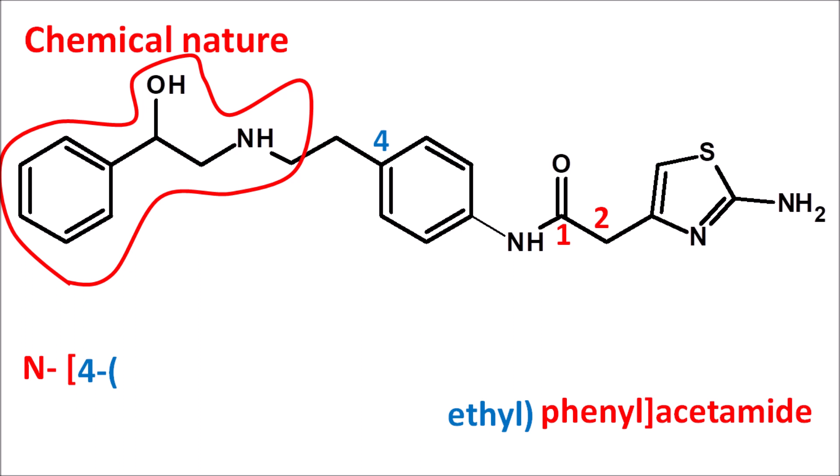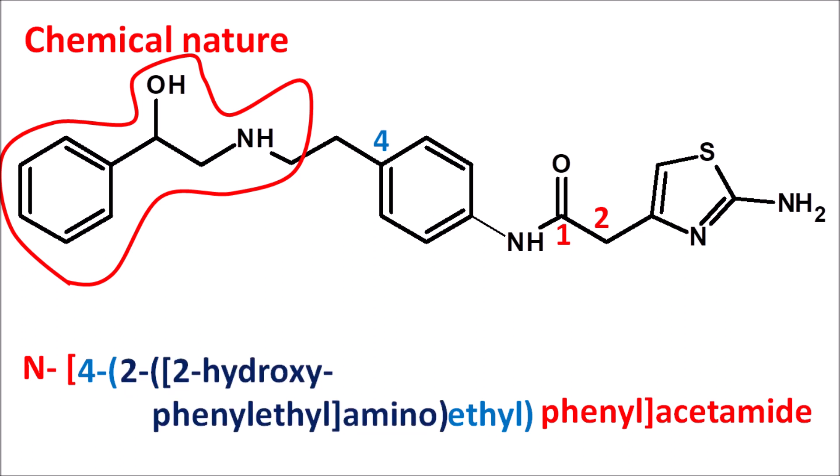Phenylethylamines are the catecholamines, which is why Mirabegron is an adrenergic receptor agonist. We can write this group as 2-(2-hydroxyphenylethylamino). This group is attached to the second position of the ethyl side chain. Finally, a heterocyclic thiazole ring is attached at the second position of the acetamide — written as 2-(2-aminothiazol-4-yl) — giving the complete name of Mirabegron.